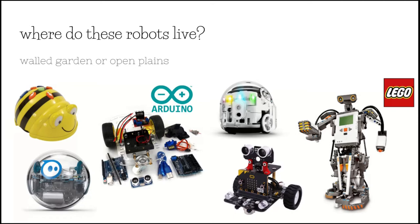So in the chat, I want you to type in and pick one of those robots there — like the Ozobot or the Sphero or the micro:bit bit bot — and say whether you think it's open or whether it's a walled platform.